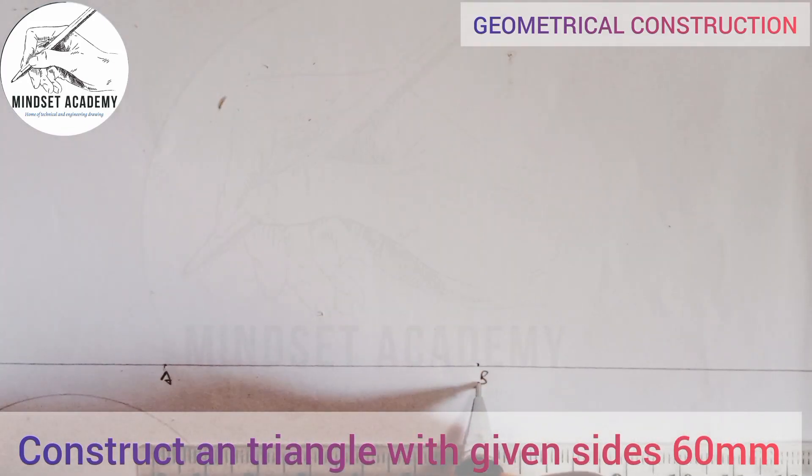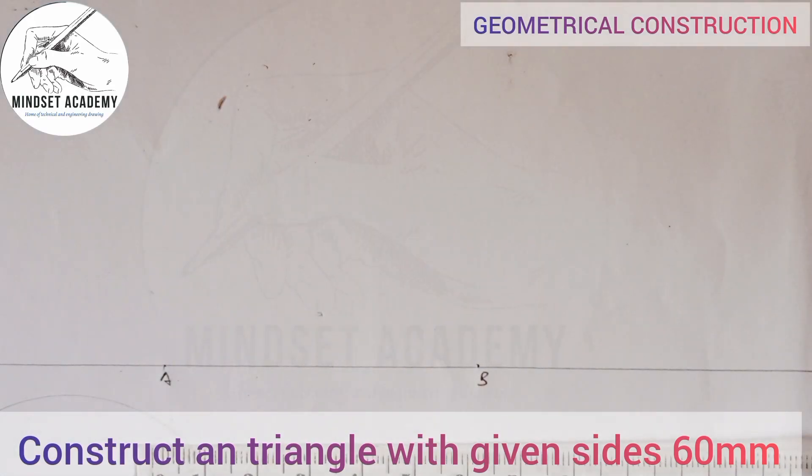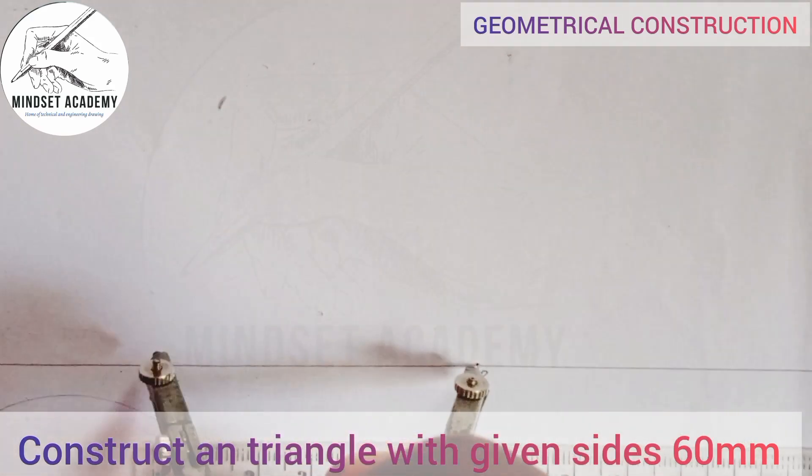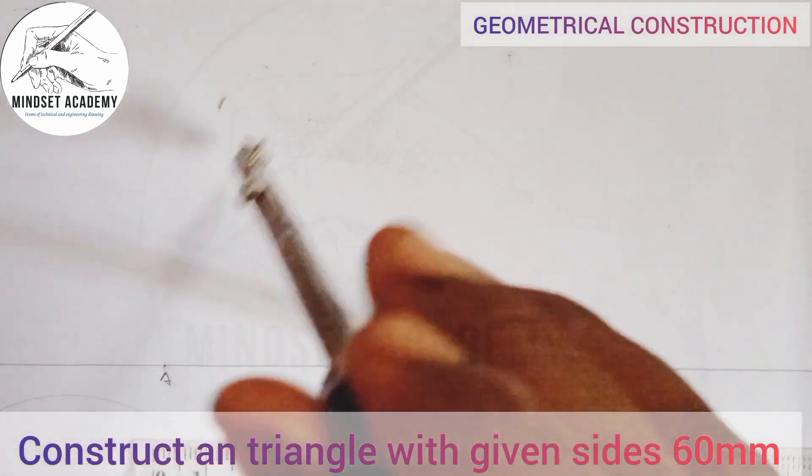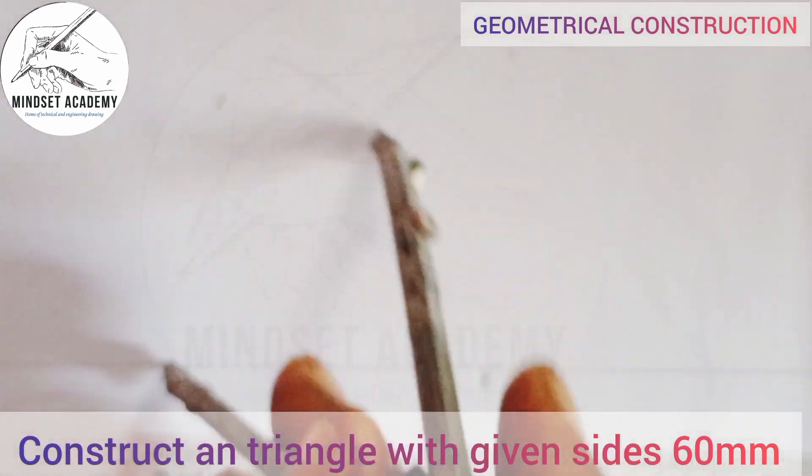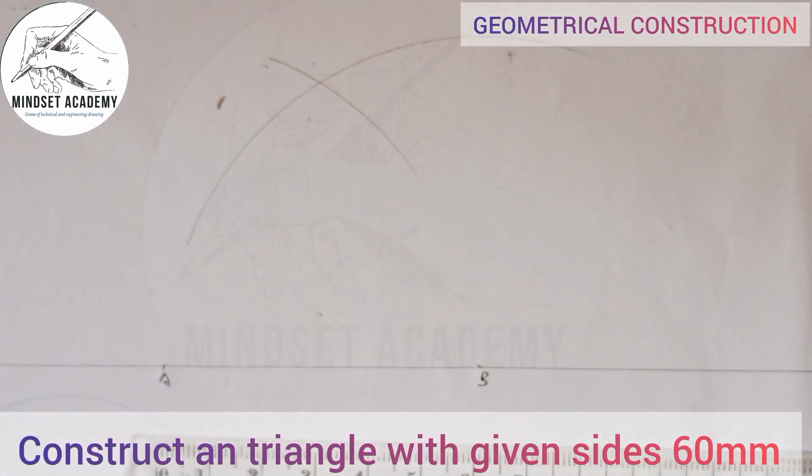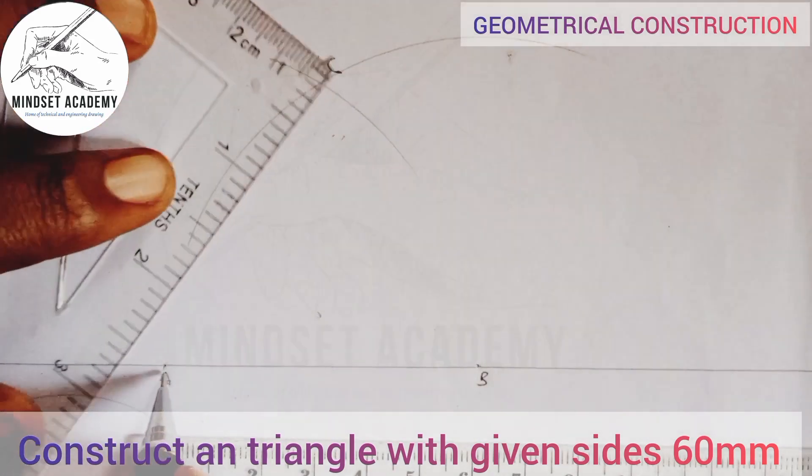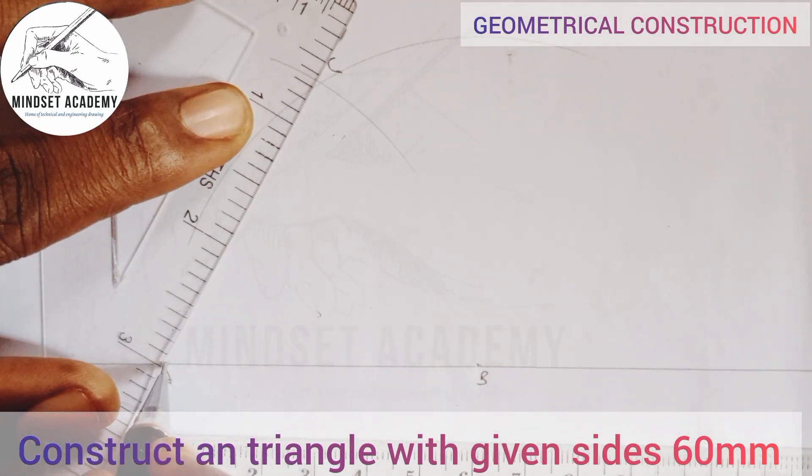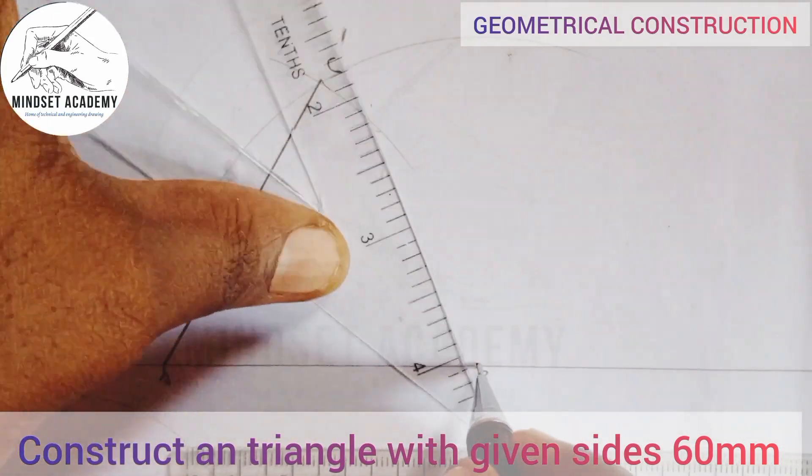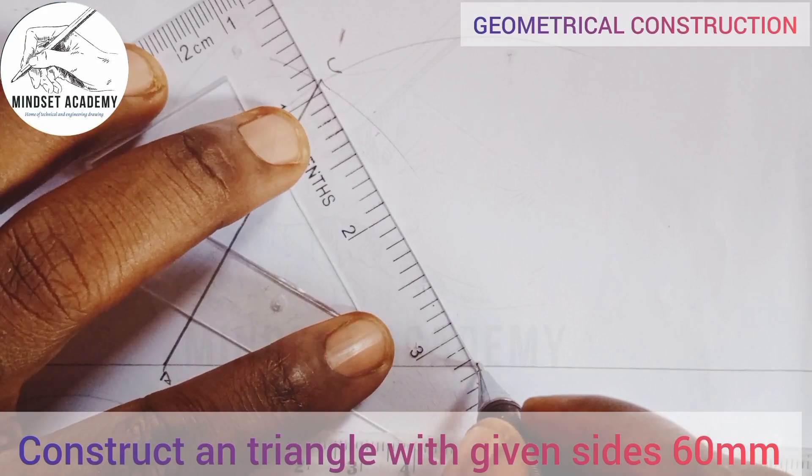Now the other side, I'll just take my compass, take it to radius AB, and I'm going to draw an arc this way. And I'll come to A, I'll draw another arc this way. Where they meet will be my point C. So I'll just take my ruler and I'm going to join A to C and B to C this way.